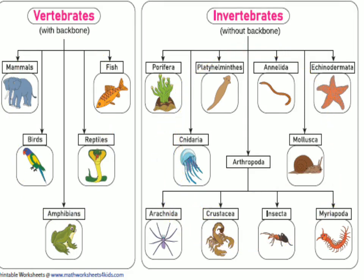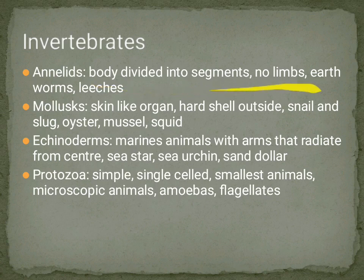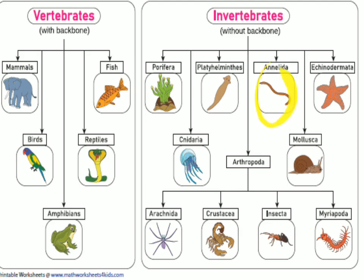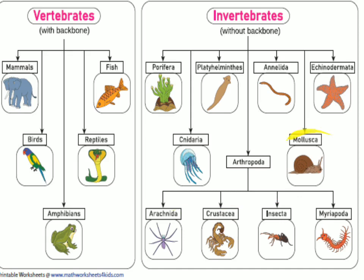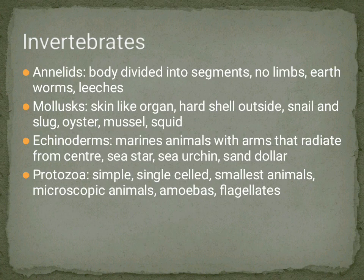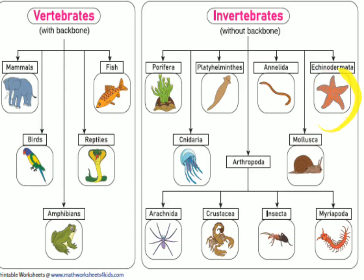Annelids are ring-worm-like animals with segmented bodies and no limb pairs — earthworms and leeches. Molluscs have a shell-covered body — like oysters, mussels, squid, snails, and slugs. Echinoderms are called starfish — their arms radiate from a central body.